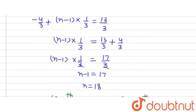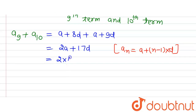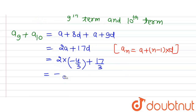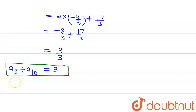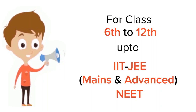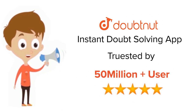Now putting in the values: a equals minus 4/3 and d equals 1/3. So 2a plus 17d equals 2 times (minus 4/3) plus 17 times (1/3), which equals minus 8/3 plus 17/3, which equals 9/3, which equals 3. So the sum of the two middle terms of the AP is 3. Thank you.